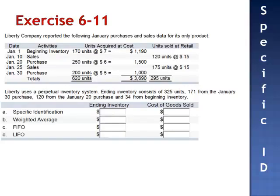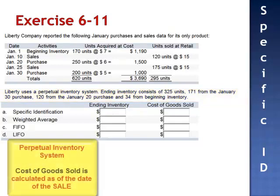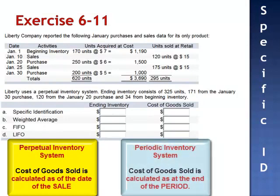In Exercise 11, we return to the Liberty Company from Exercise 3. But in Exercise 11, instead of assuming that Liberty uses a perpetual inventory system where cost of goods sold was calculated as of the date of the sale, using a periodic inventory system, cost of goods sold is calculated at the end of the period.